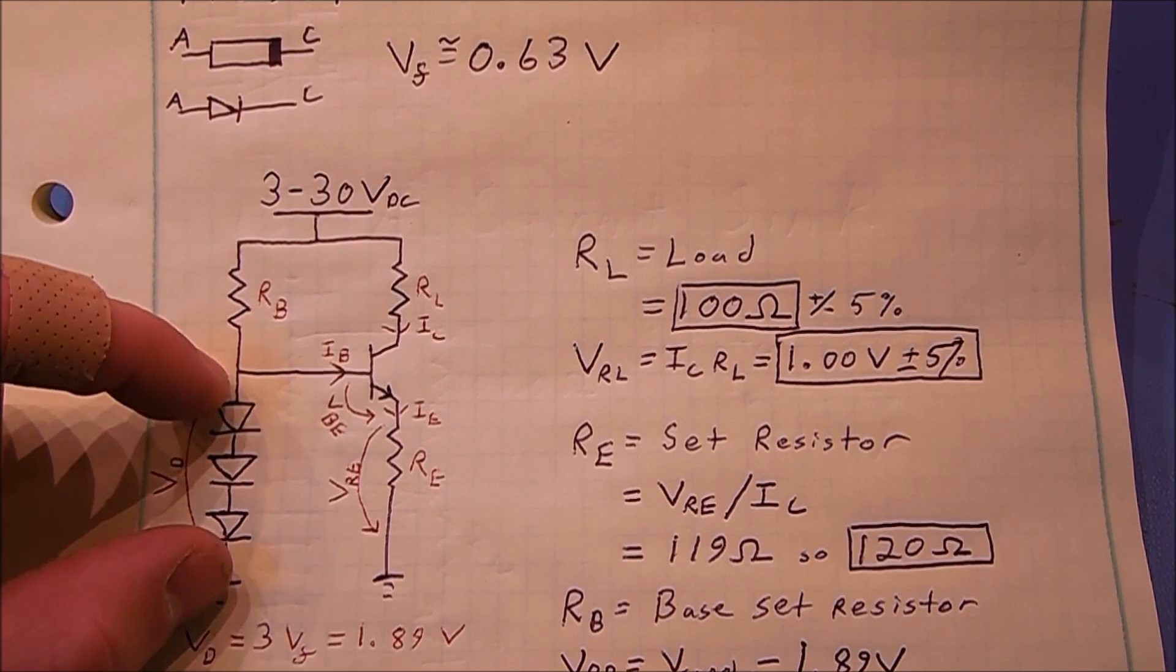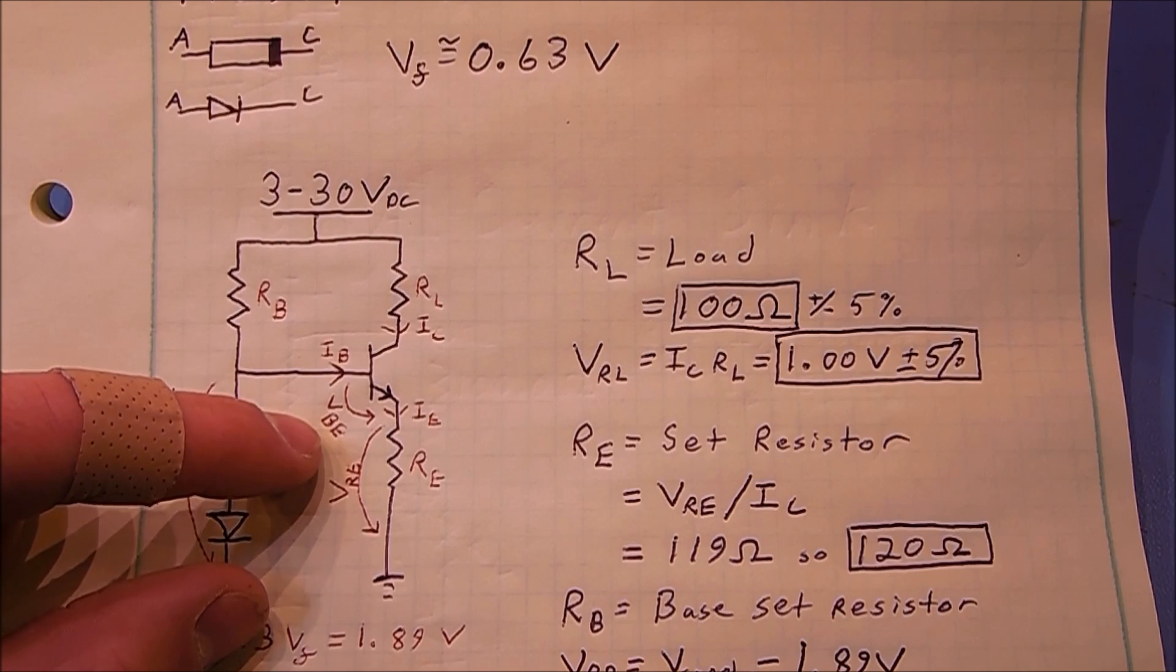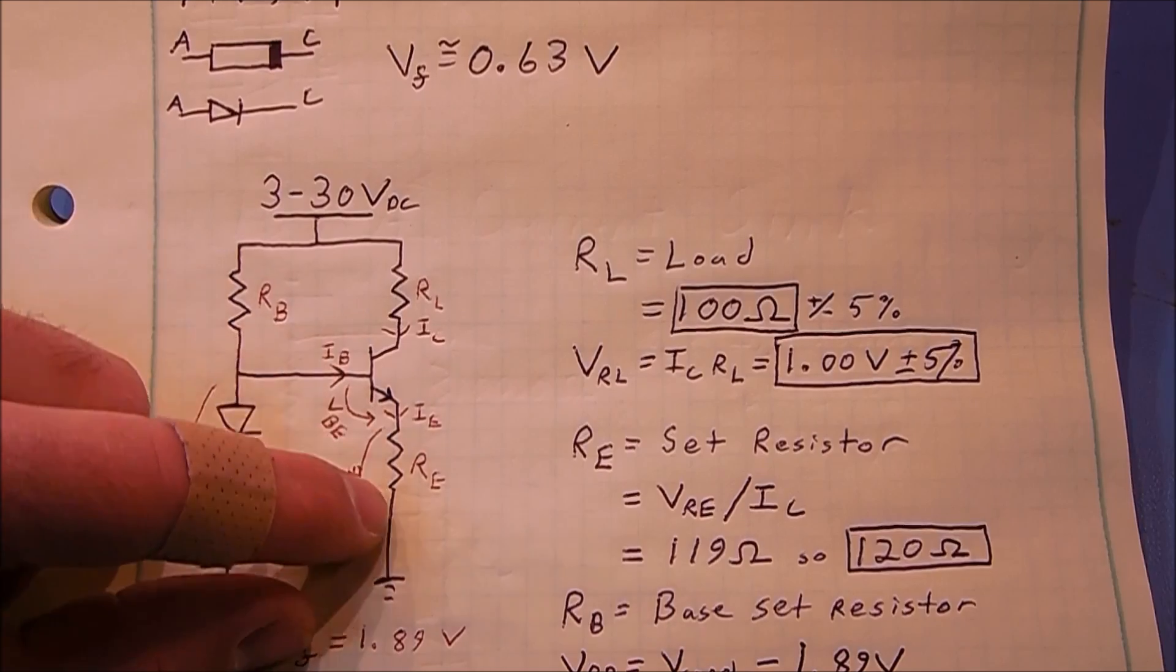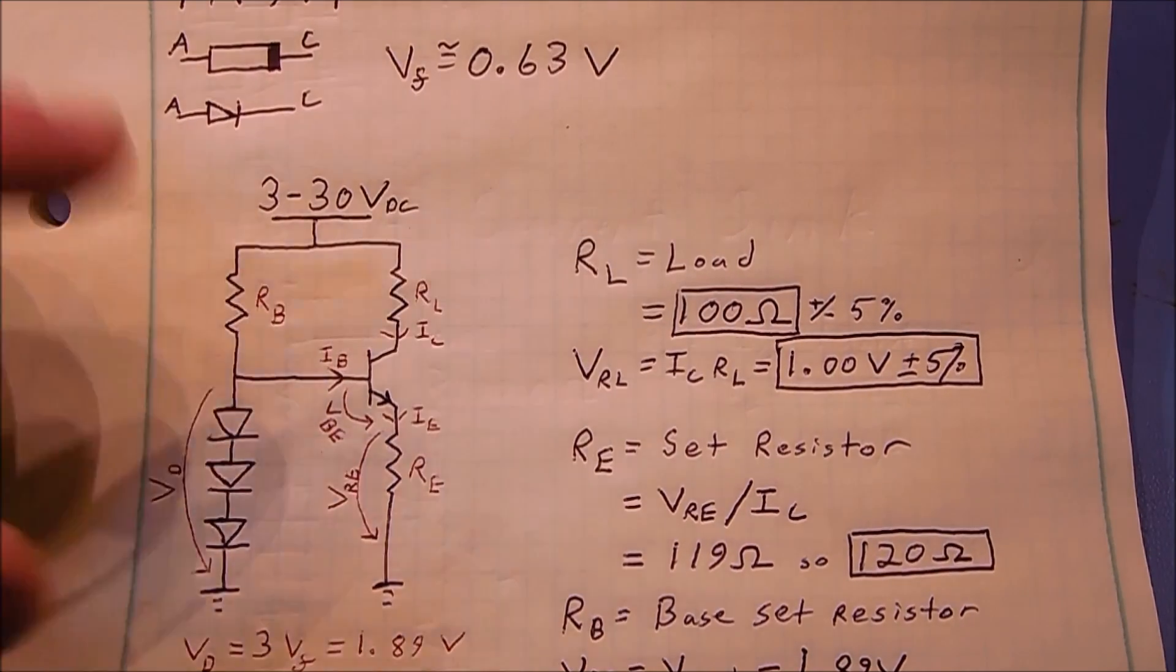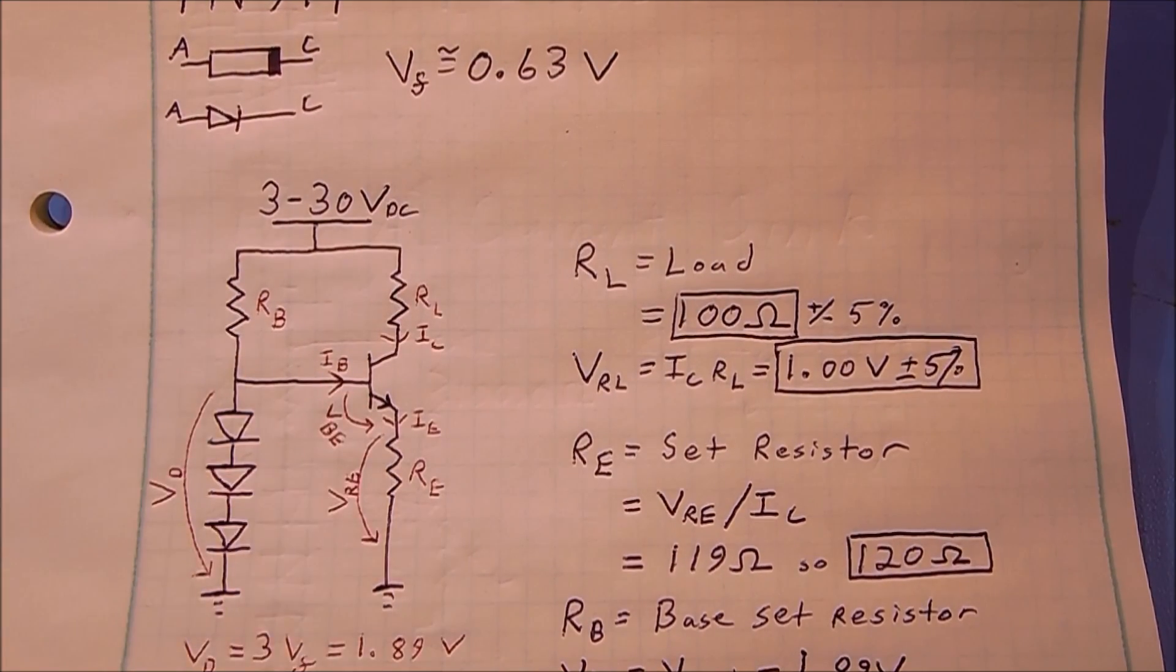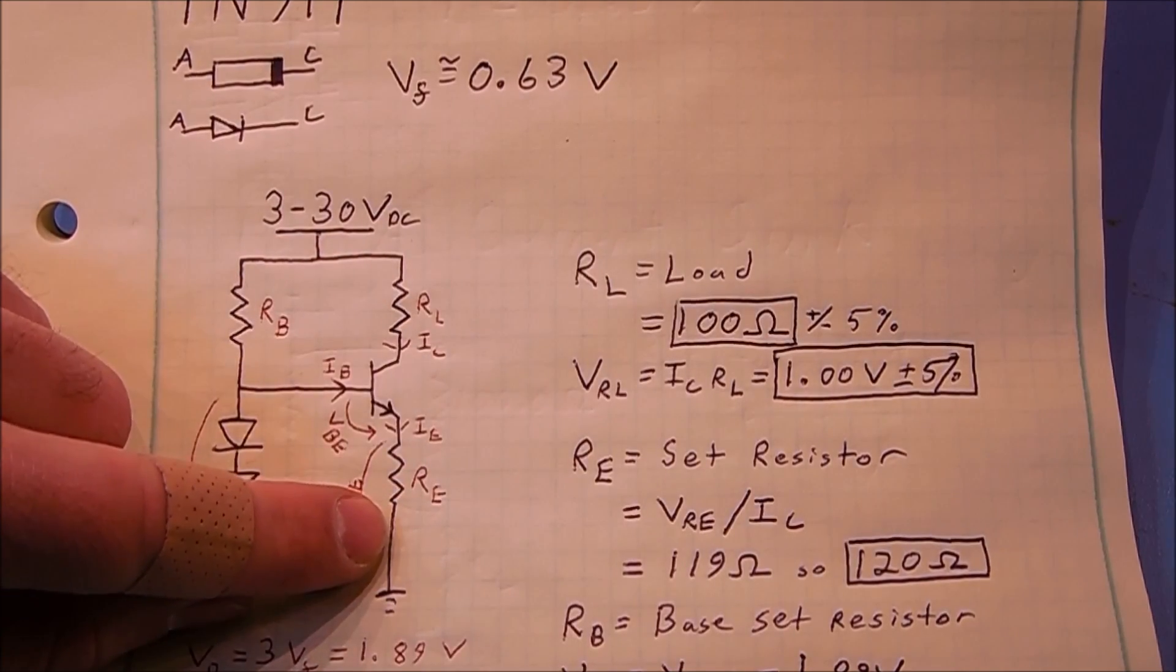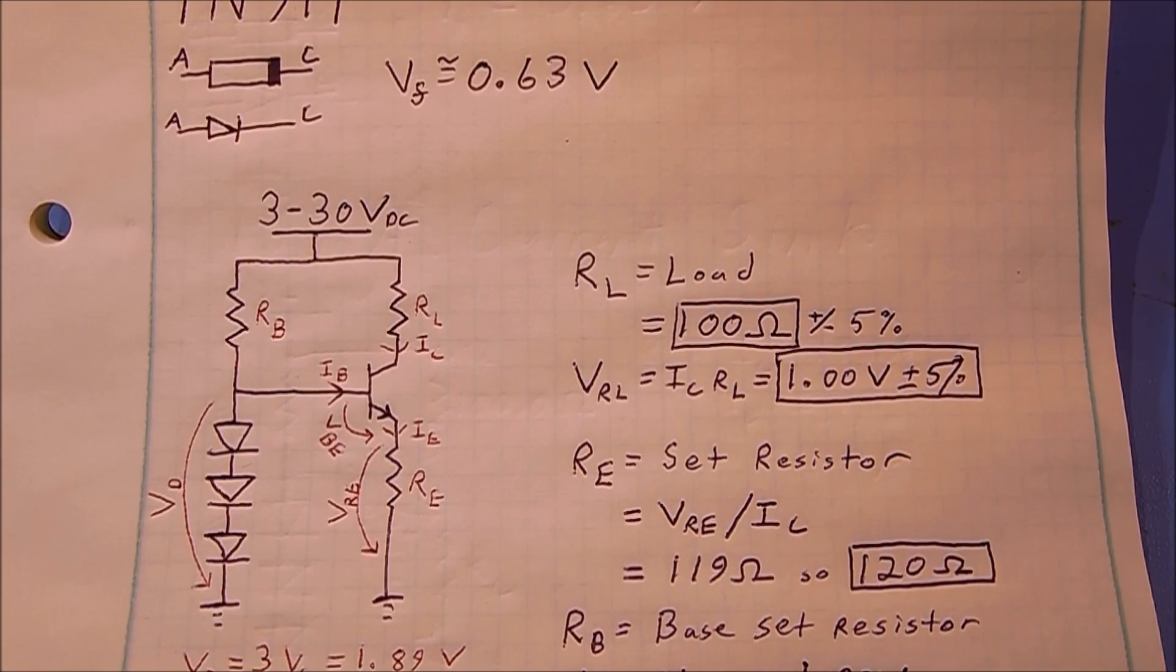We take our 1.89 volts and subtract our VBE of 0.7 volts. We have 1.19 volts, which is about 1.2 volts left across our emitter resistor. So now we have 1.2 volts across that resistor and 10 milliamps flowing through it to ground. Using Ohm's law, 1.2 divided by 0.01 gives us a 120 ohm resistor for our emitter resistor.